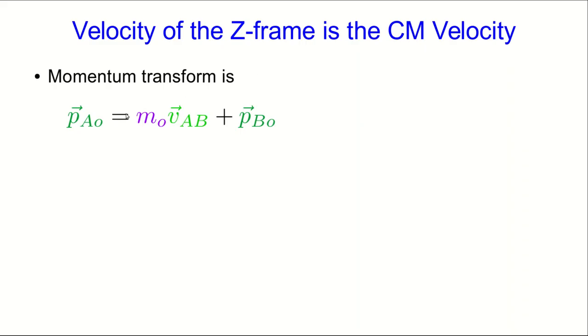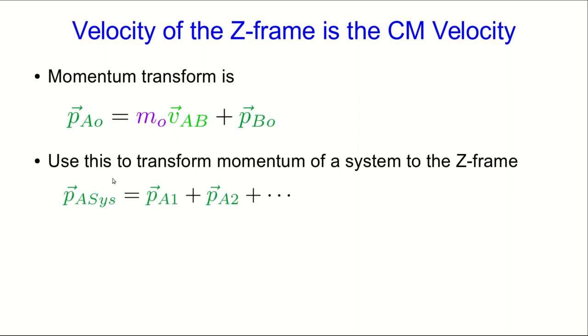Now that we have the momentum transform, we can do what we set out to do. Remember that what we wanted was the velocity of the zero momentum frame so that we can transform into it, because our problem is simpler to solve there. So I'm not going to show you the full derivation because it's a little long. It's in the supplementary videos if you're interested, or you can try and do it yourself. But what you do is you start with the momentum of the whole system. You transform each of those momentums, and after some rearrangement you get this.